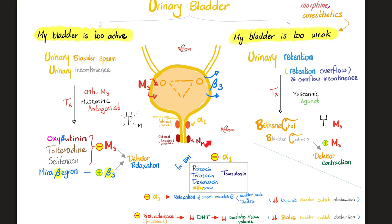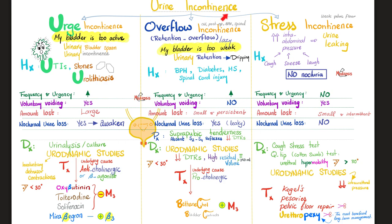Since the prostate gland depends on male hormones — specifically dihydrotestosterone (DHT) rather than testosterone itself — we can inhibit the enzyme that converts testosterone to DHT. That enzyme is 5-alpha reductase, so we give a 5-alpha reductase inhibitor such as finasteride to decrease prostate tissue volume. Inhibiting alpha-1 decreases dynamic bladder outlet obstruction, while decreasing prostate size decreases static bladder outlet obstruction.